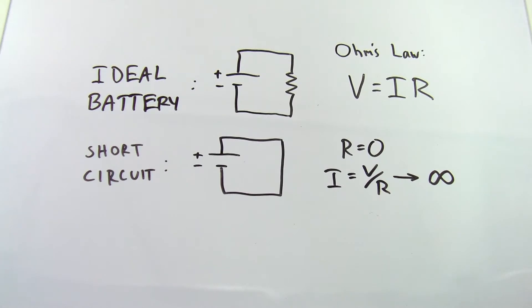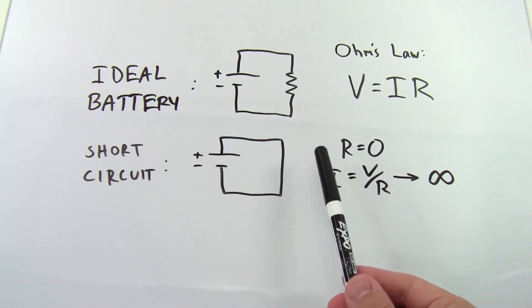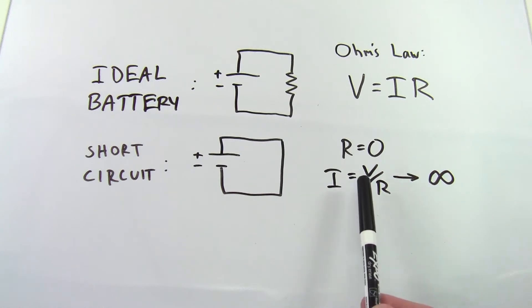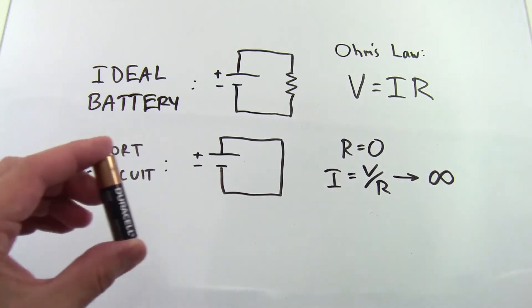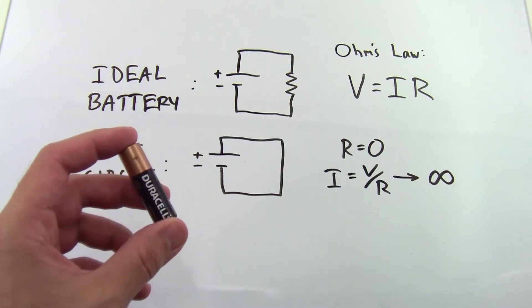However, this model presents a problem if I short-circuit the battery. If I connect the terminals of the battery directly to each other with a zero-resistance wire, then Ohm's law, when rearranged to solve for the current so I equals V over R, tells me that I'm dividing by zero so the current will approach infinity. Clearly, I'm not going to get infinite current out of this AA battery, so that can't be right.